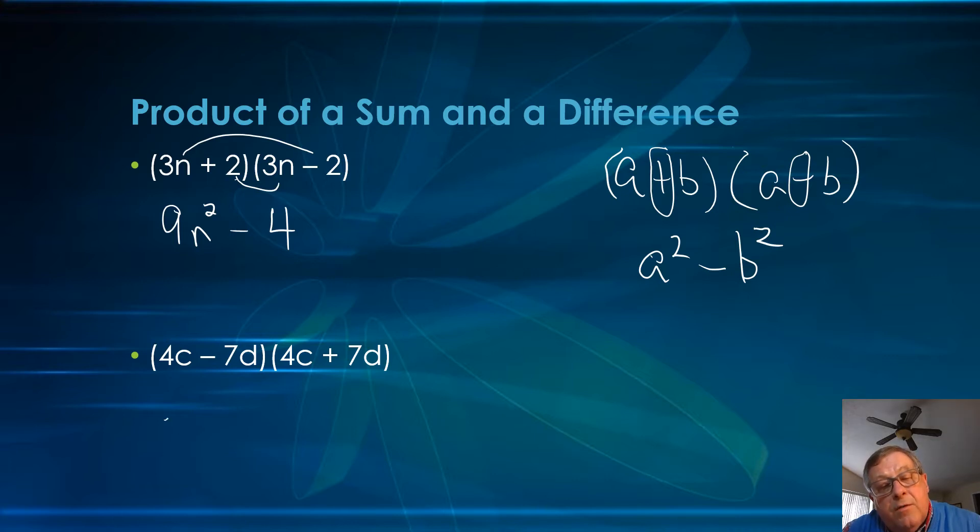4c squared is 16c squared. 4 times 4 is 16. Then minus 7 and 7 is 49, and d times d is d squared. So minus 49d squared.